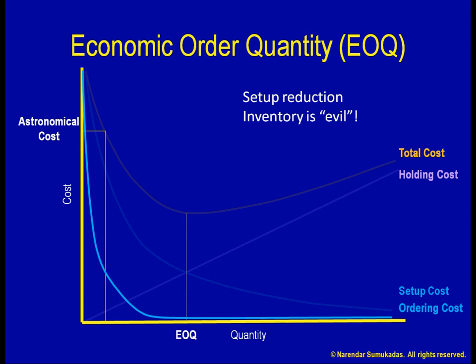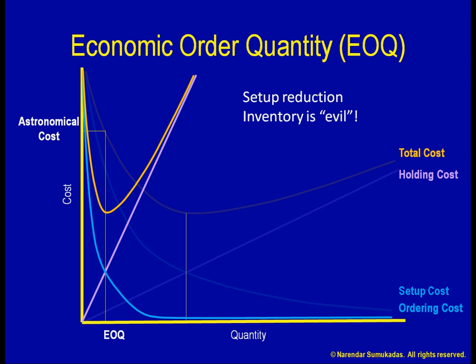Once we factor in the intangible costs of holding inventory, or the hidden base of the iceberg, we see that the holding cost rises much more sharply than we originally estimated. With these newly calculated setup cost and holding cost values, we can recalculate the EOQ to be a much smaller number than before. Progressively, as we continue with setup reduction, we aim to achieve an ideal batch size of 1.